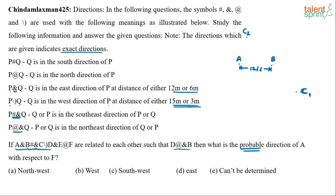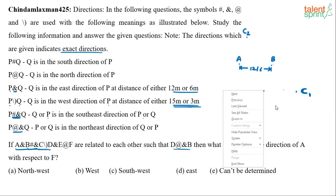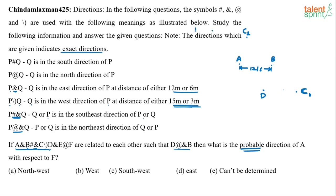For now, let's not focus too much on exact distances and just mark the positions. D should be in the west direction of C. D could come before B, between A and B, or even beyond A — all are possible along that line. So we mark D1 and D2 as two possible positions of D in the west of C.